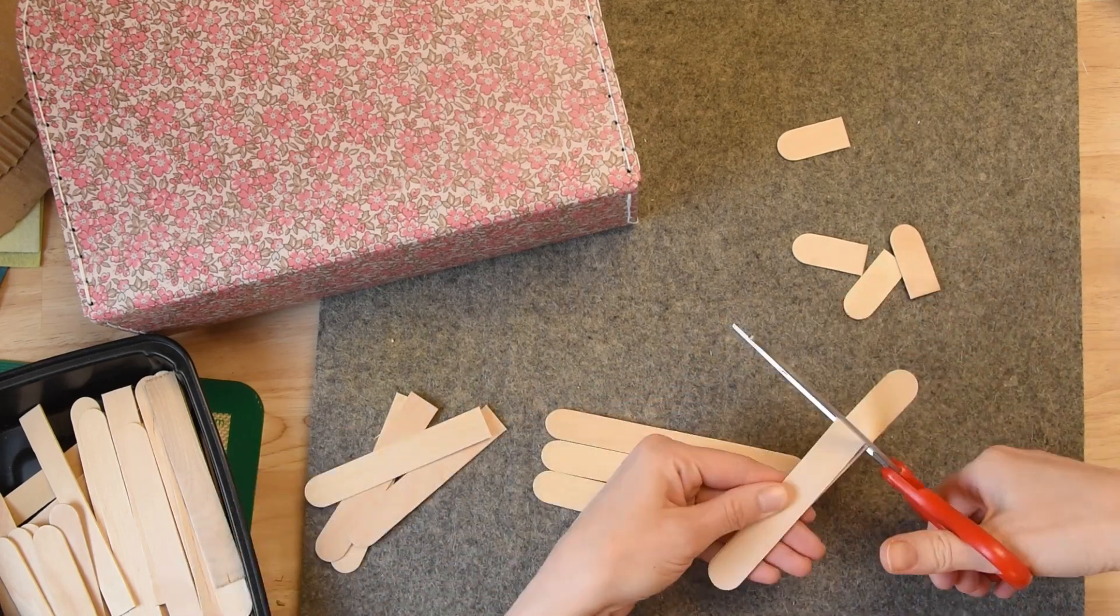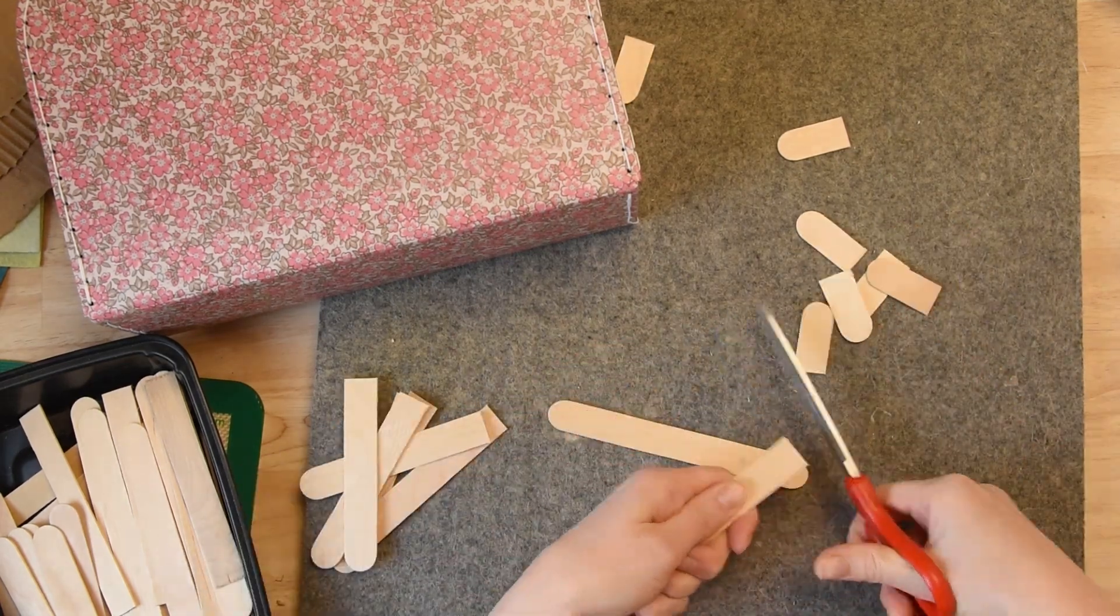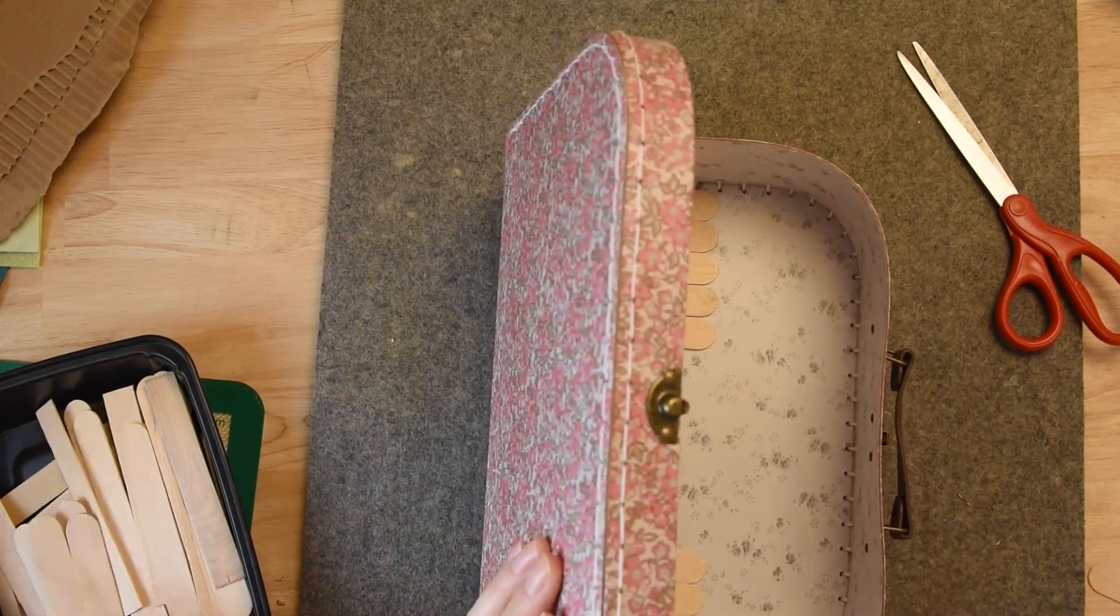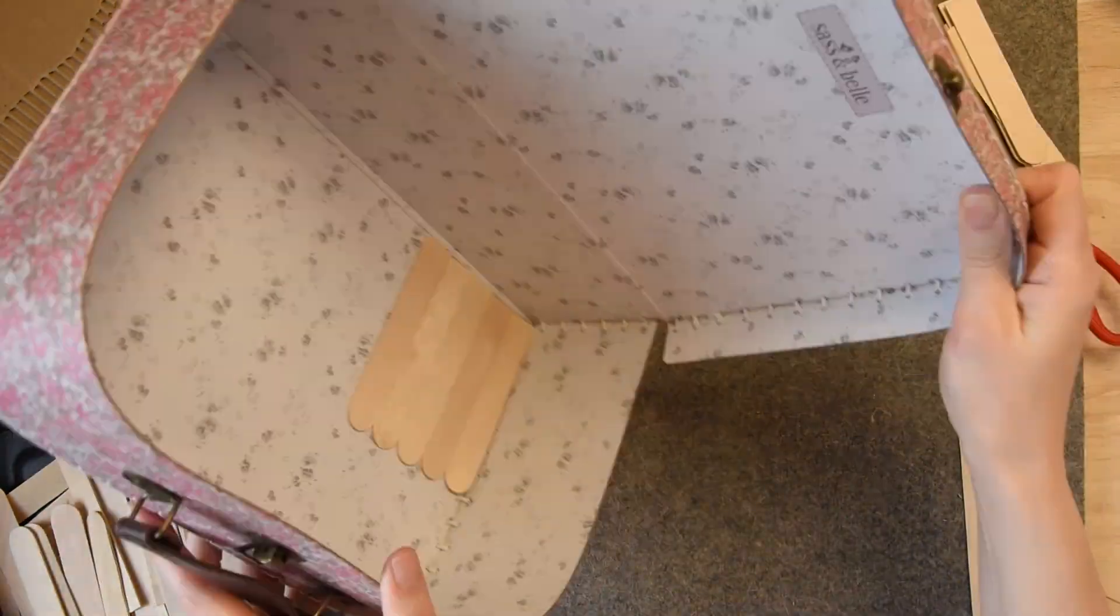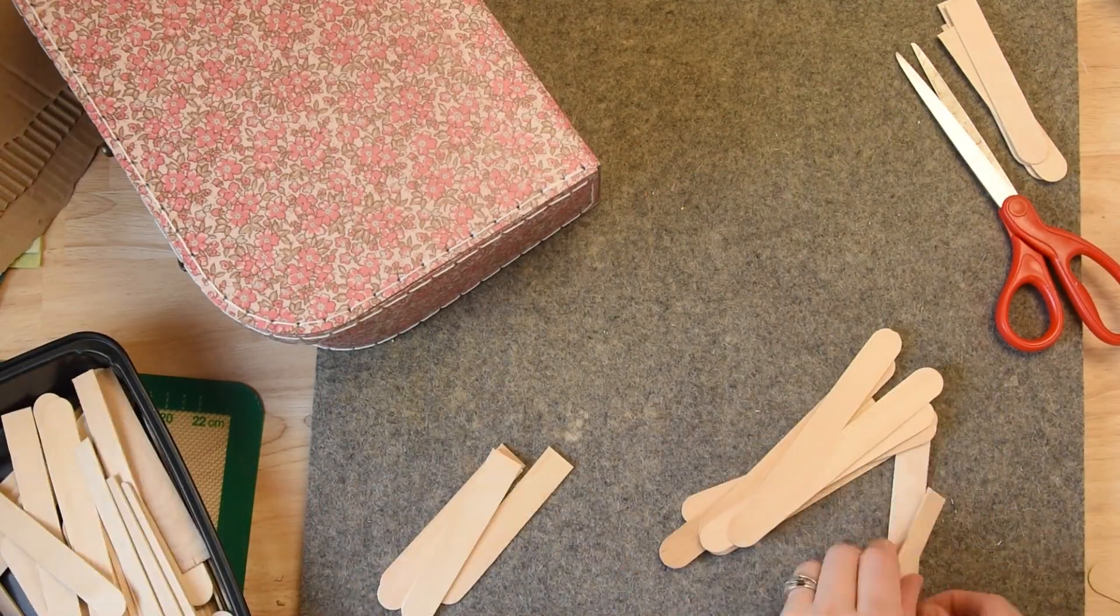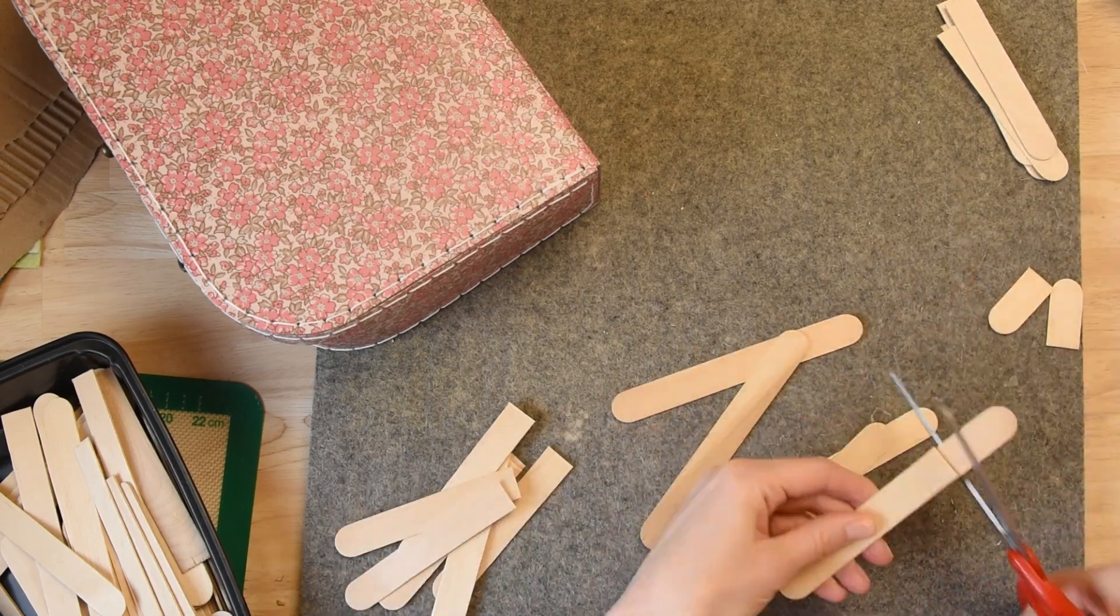I'm going to start by making the fence all around the outside of the garden. We're going to be doing Mr. McGregor's garden, which is of course enclosed in a fence. And I'm just using some of these big thick one-inch popsicle sticks.